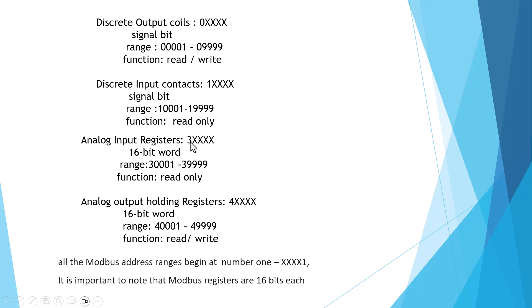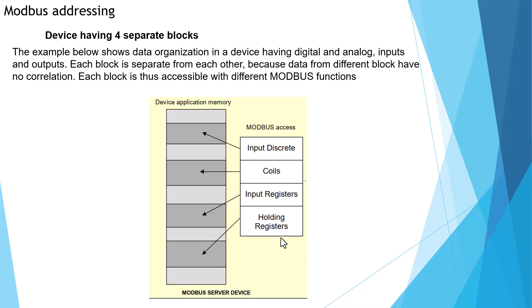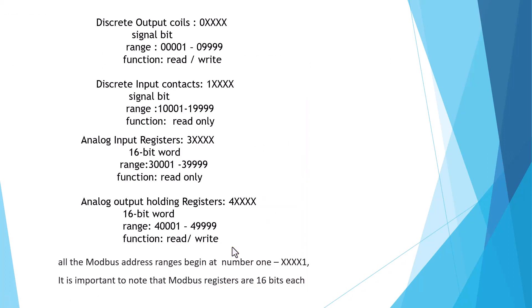The analog input register starts with three for the leading digit. It is a 16-bit word — analog input — ranging from 30001 to 39999. The function is read only. The analog output holding register starts with four as the leading digit. It is also a 16-bit word, ranging from 40001 to 49999. The function code is read and write.